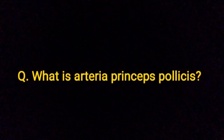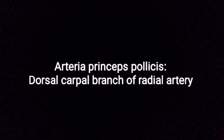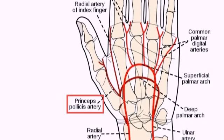What is Arteria Princeps Pollicis? Arteria Princeps Pollicis is the Dorsal Carpal Branch of the Radial Artery.